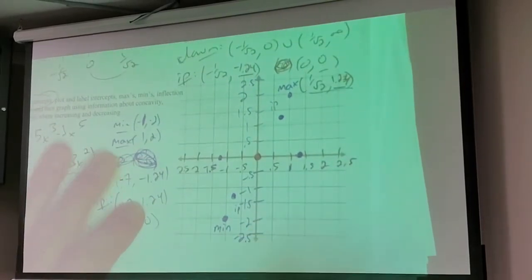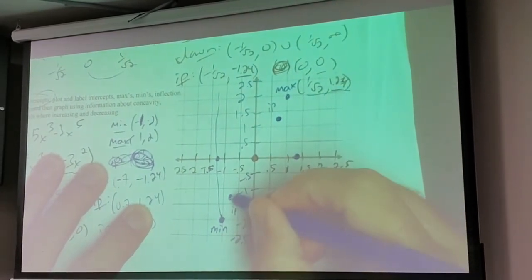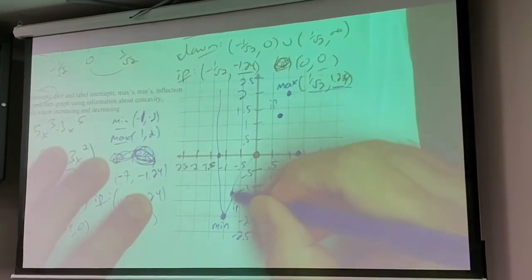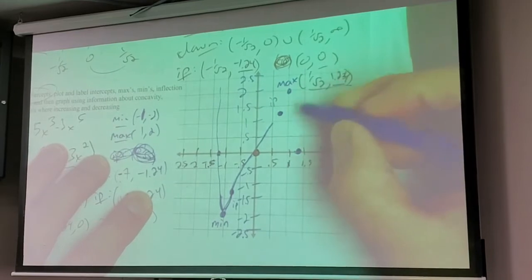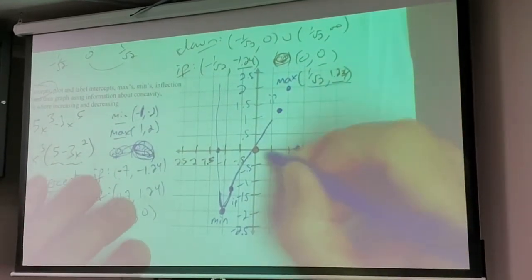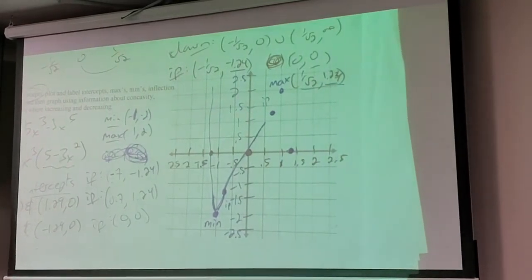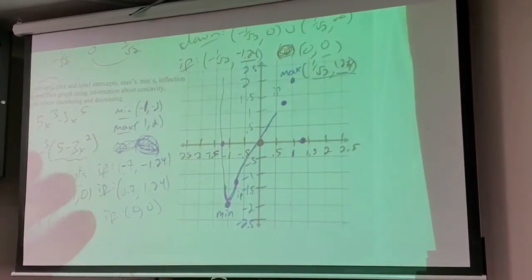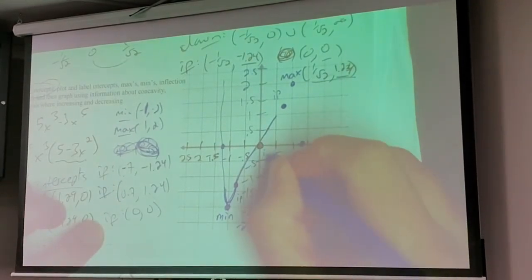That's the last time I have to look at any of this; I can just look at what I have labeled. It's going to come down, be concave up throughout here, then become concave down. Then it's going to be concave down - when does it become concave up again? I forgot to label one thing. The labels will keep you straight - how many inflection points do I have? Three. Which one did I forget? Zero-zero.